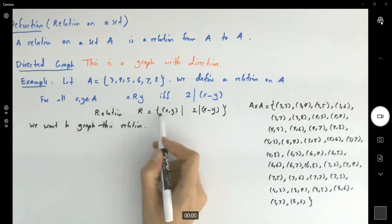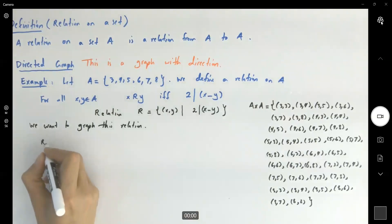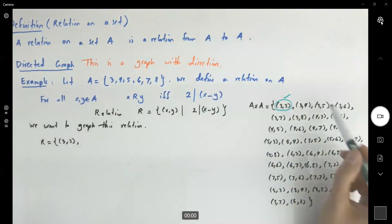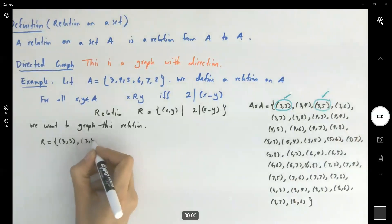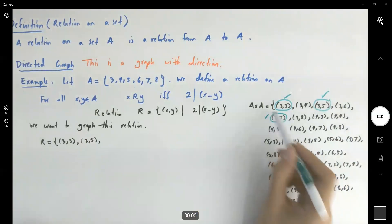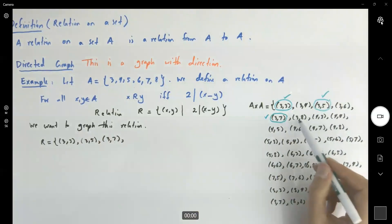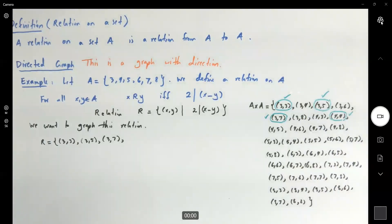R is the set of all points such that 2 is the factor of their difference. So let's start. 2 divides 0? Yes. 3 and 3 is the first member in this set. 3 and 4? No. 3 and 5? Yes. 2 divides 3 minus 5. So 3 and 5. 3 and 6? Nope. 3 and 7? Yes. 3 and 8? Nope, because the difference is 5. 4 and 3? The difference is 1. 4 and 4? Yes. The difference is 0. 2 divides 0. So we have 4 and 4.